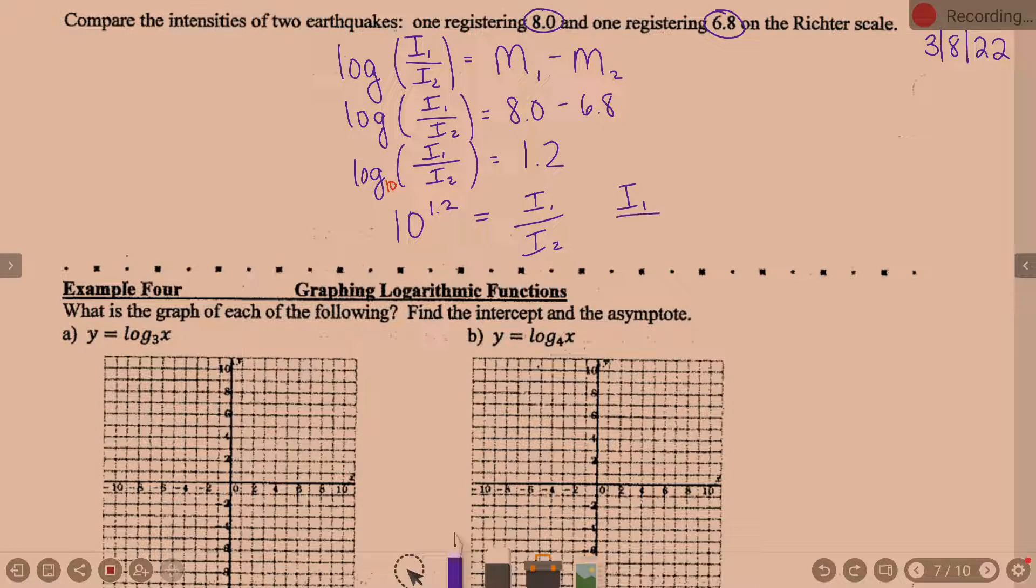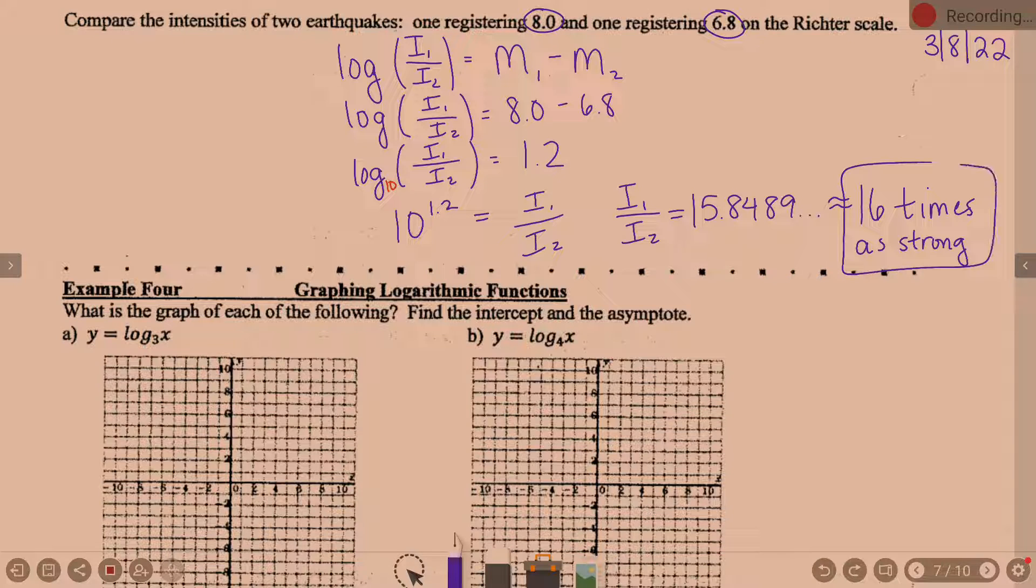So this is where you grab the calculator. What is 10 raised to the 1.2? I wrote down 15.8489 dot dot dot in my notes, which is approximately 16 times as strong. Which to me seems like a lot, when it's only a 1.2 difference on the Richter scale, but yet it's 16 times as strong.